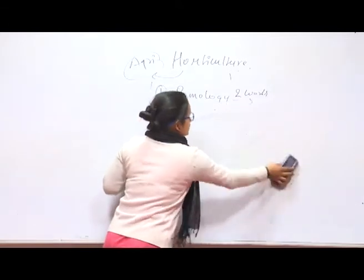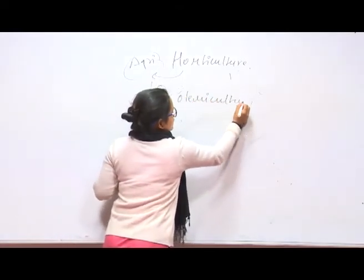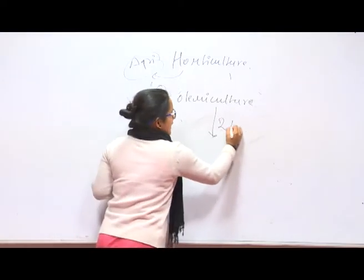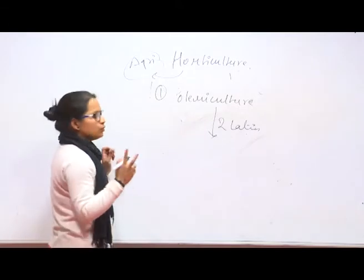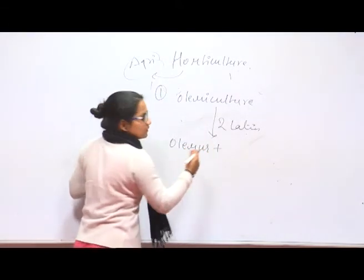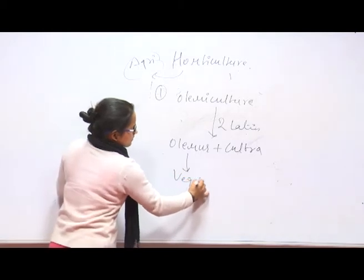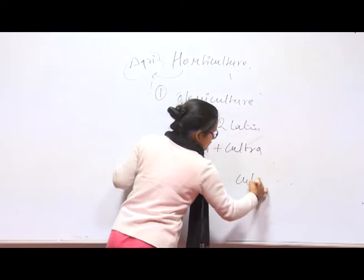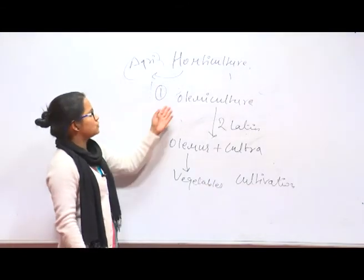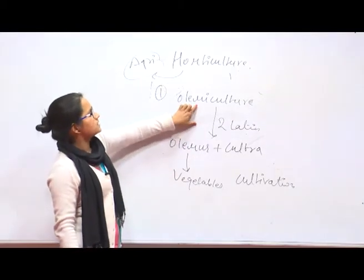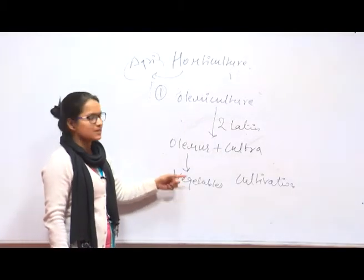Coming to the next branch, that is Olericulture. Olericulture is made up of two Latin words: Olerus and Cultura. The meaning of Olerus is vegetables and the meaning of Cultura is cultivation. So Olericulture is a branch of Horticulture in which we study about the cultivation of vegetables.